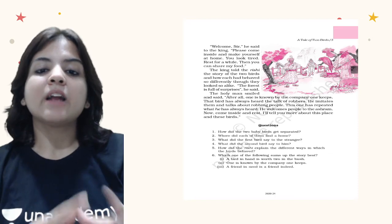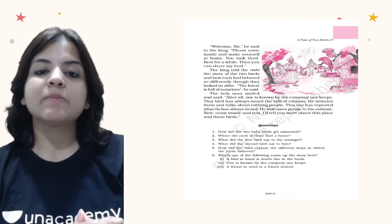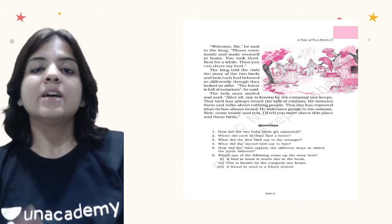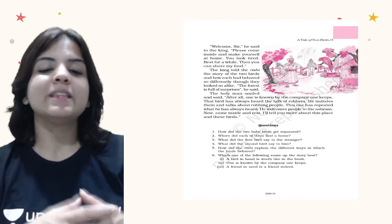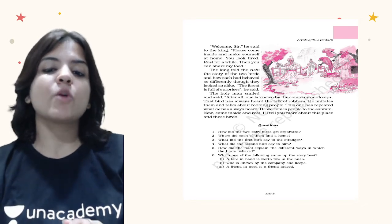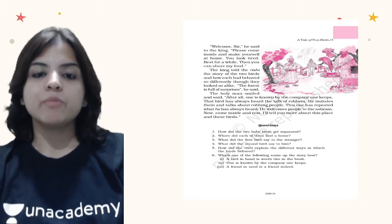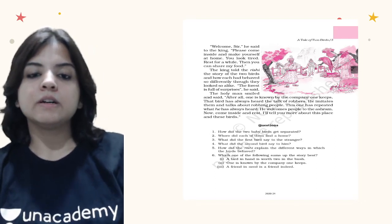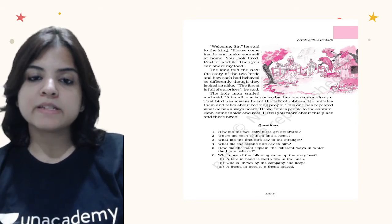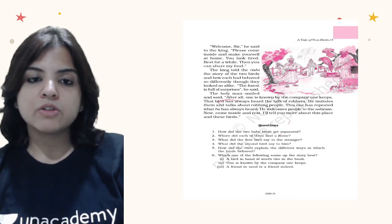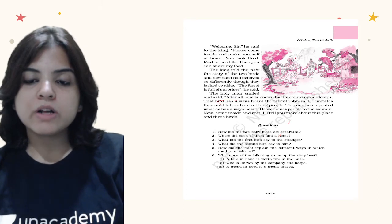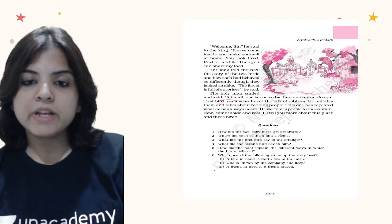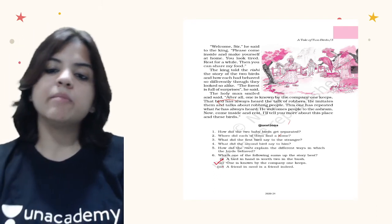The second bird welcomes people to the ashram, and the Rishi invited the king inside to rest and learn more. The moral is clear: we are known by the company that we keep. Moving to question number 6 — which of the following sums up the story the best? The answer is: 'One is known by the company that one keeps' — not 'A bird in a hand is worth two in the bush' or 'A friend in need is a friend indeed.'